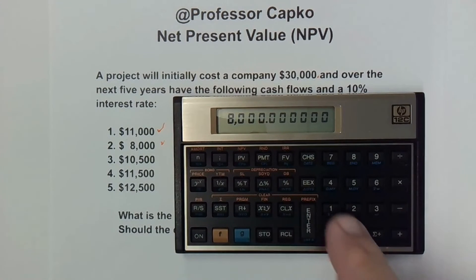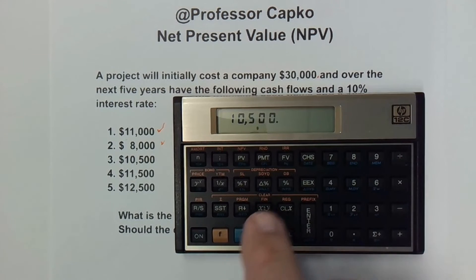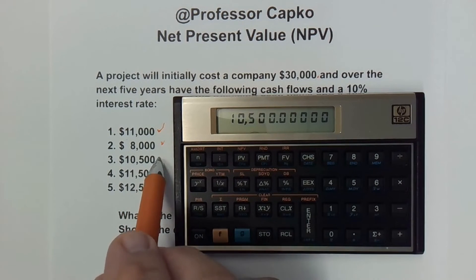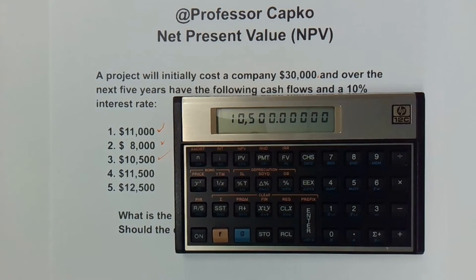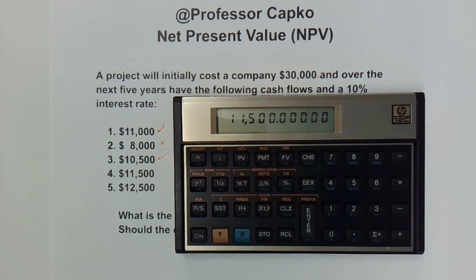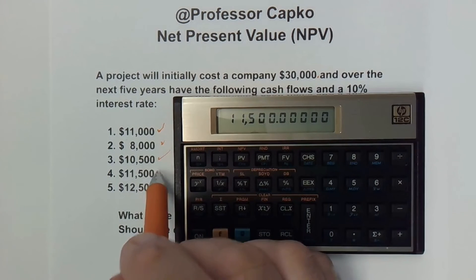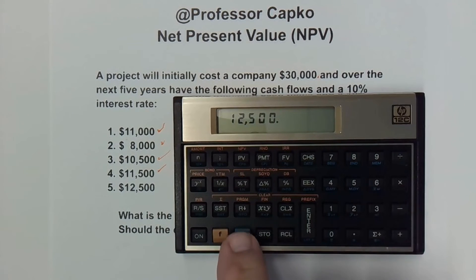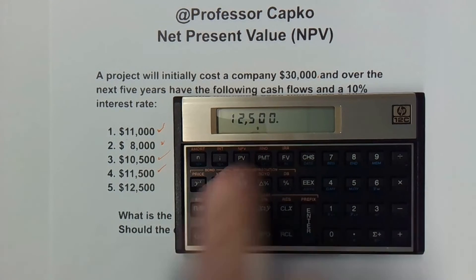Next is 10,500 for the third year. I hit G again where the payment button is and hit that, and it enters that into the information. Then the fourth year is 11,500 — once again hit G and the cash flow button. Check that one off. And the last one is 12,500 — hit G and the cash flow button. So now I've entered all of the cash flows.